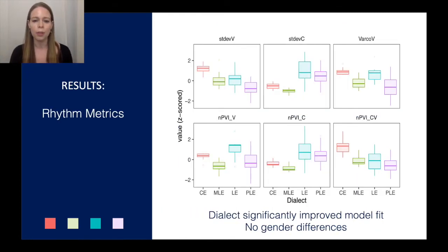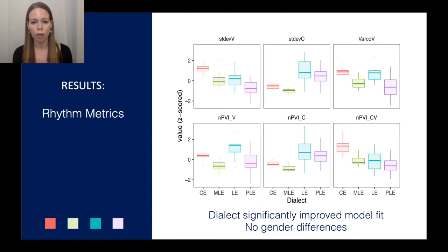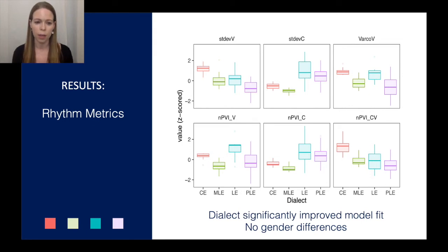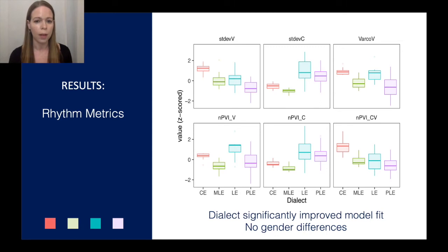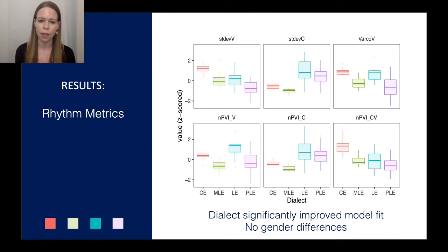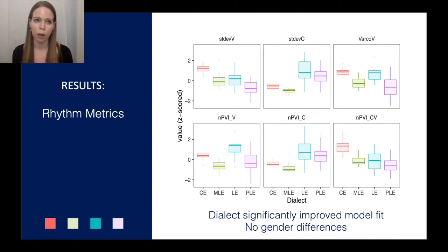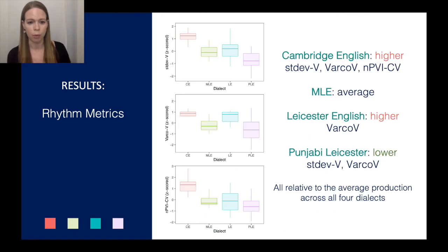I'll present an overview of the results for each rhythm metric and each dialect. We z-scored all values for visual comparison, and for each rhythm metric we fit a linear regression model with predictors of dialect and gender. It wasn't a mixed effects model because there's only one measure per speaker per audio file. In all cases, dialect significantly improved model fit, and interestingly there were no significant gender differences within the models.